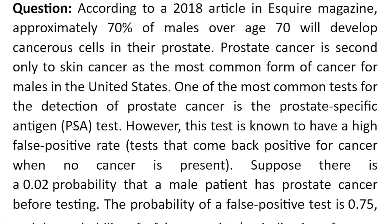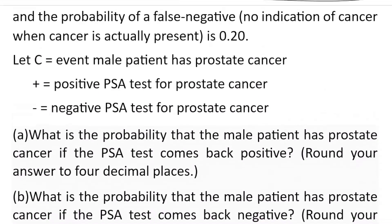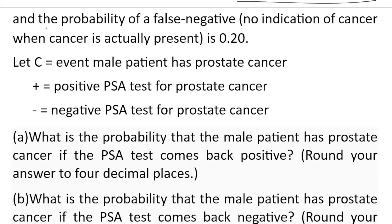Hello students, let us start today's portion. The first important information is the probability that a male patient has prostate cancer before testing is 0.02. The probability of a false positive test is 0.75 — meaning the test gives a positive result for cancer while the patient has no cancer. The probability of a false negative test is 0.20 — meaning the test gives a negative result when the patient actually has cancer.